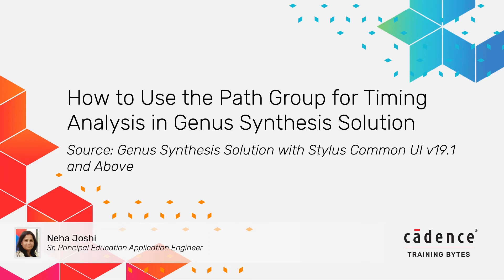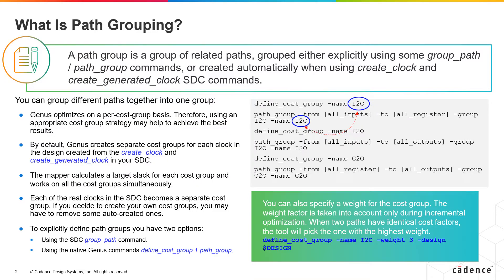This video explains the concept of path grouping and how it is implemented in Genus. By default, Genus attempts to optimize the timing path with the worst negative slack, WNS.